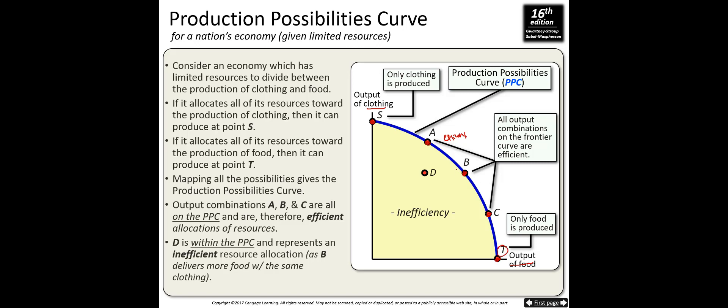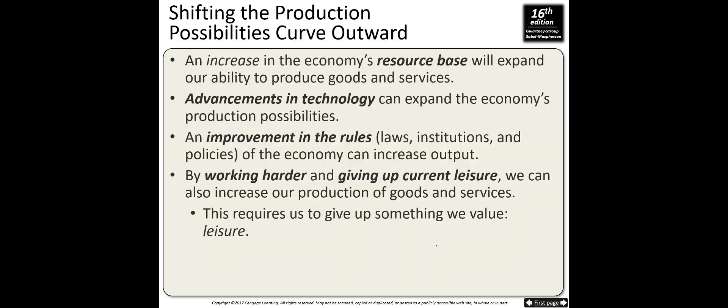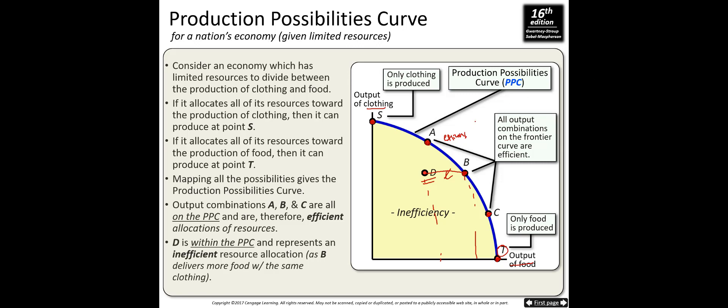Anything inside the production possibility curve is inefficient — you can do better by using your resources more fully and moving to a point on the curve where you have the same amount of clothing but more food. Any point on the curve is efficient, meaning all resources are in use. Any point outside the curve, like point F, is unattainable given your current resources.